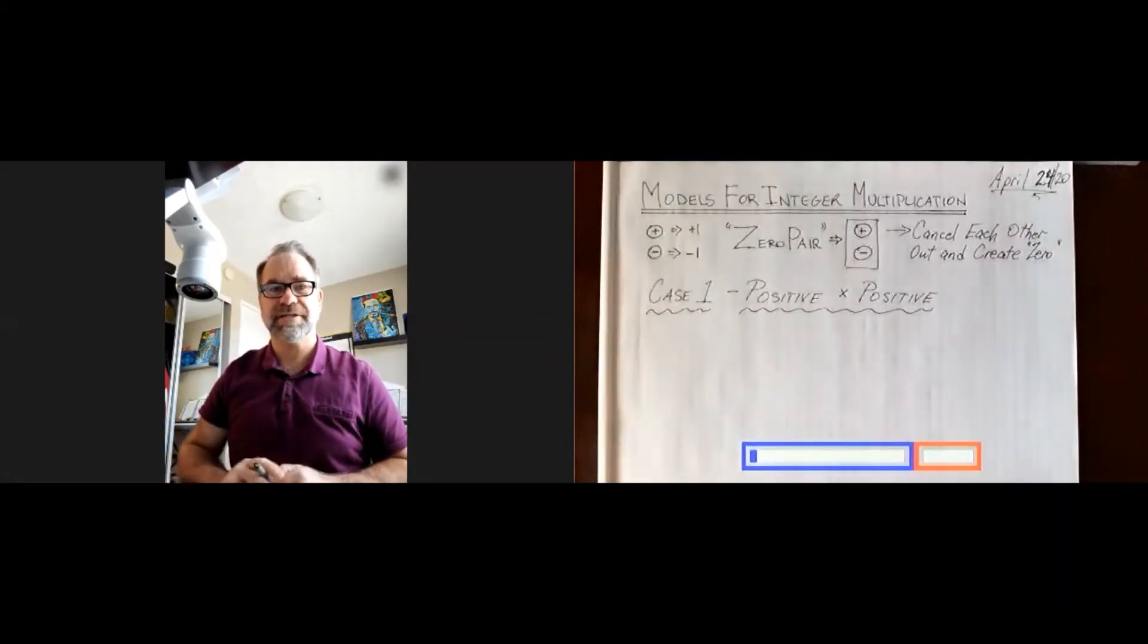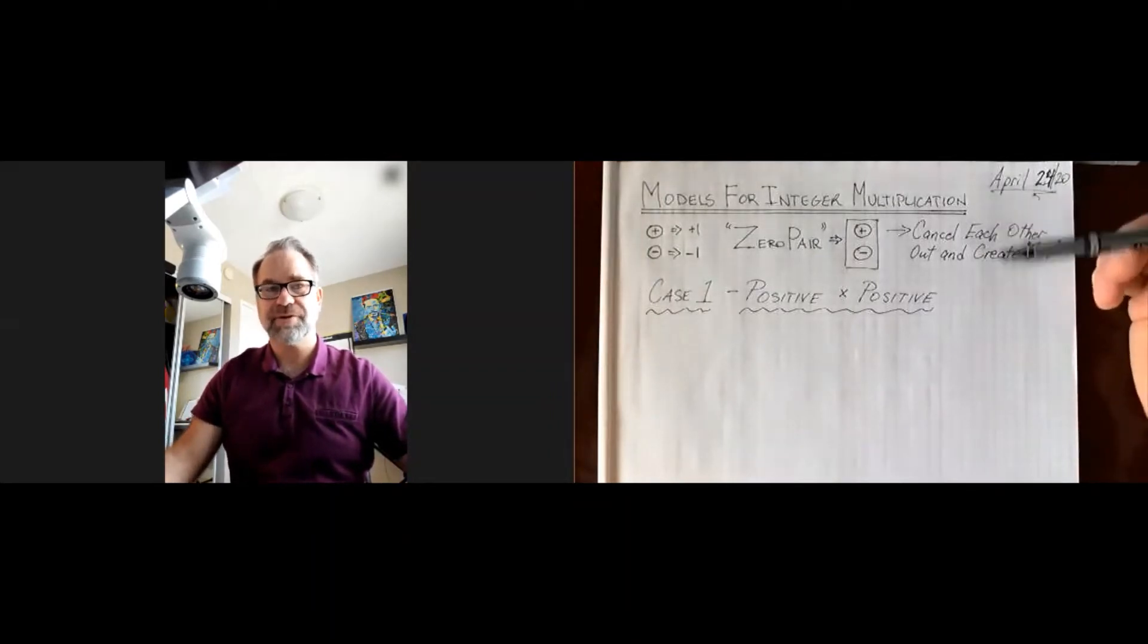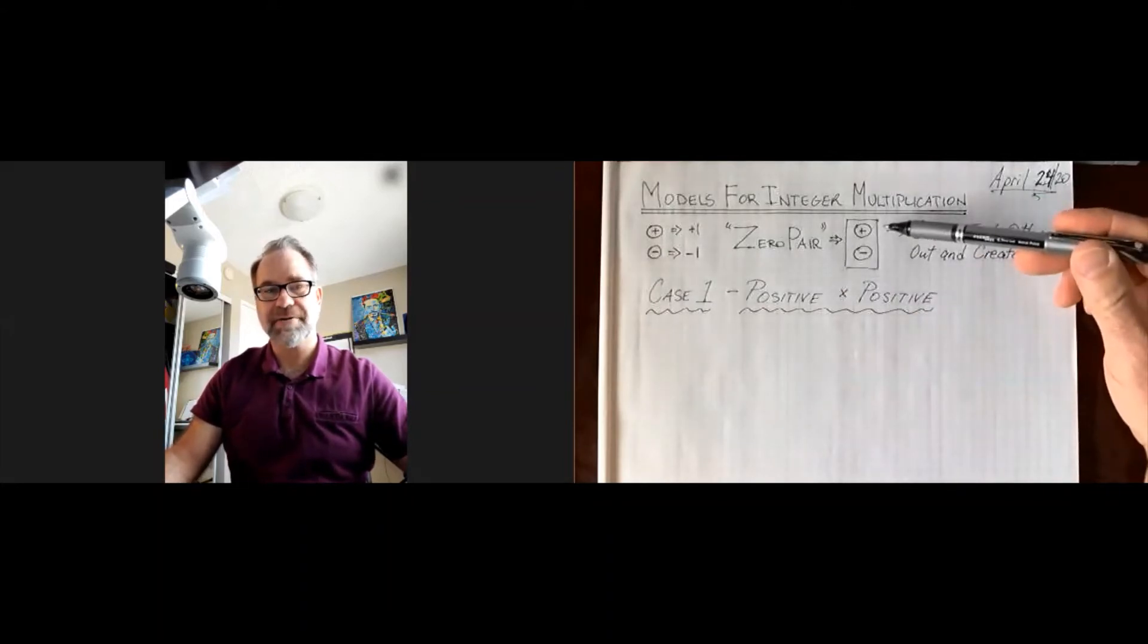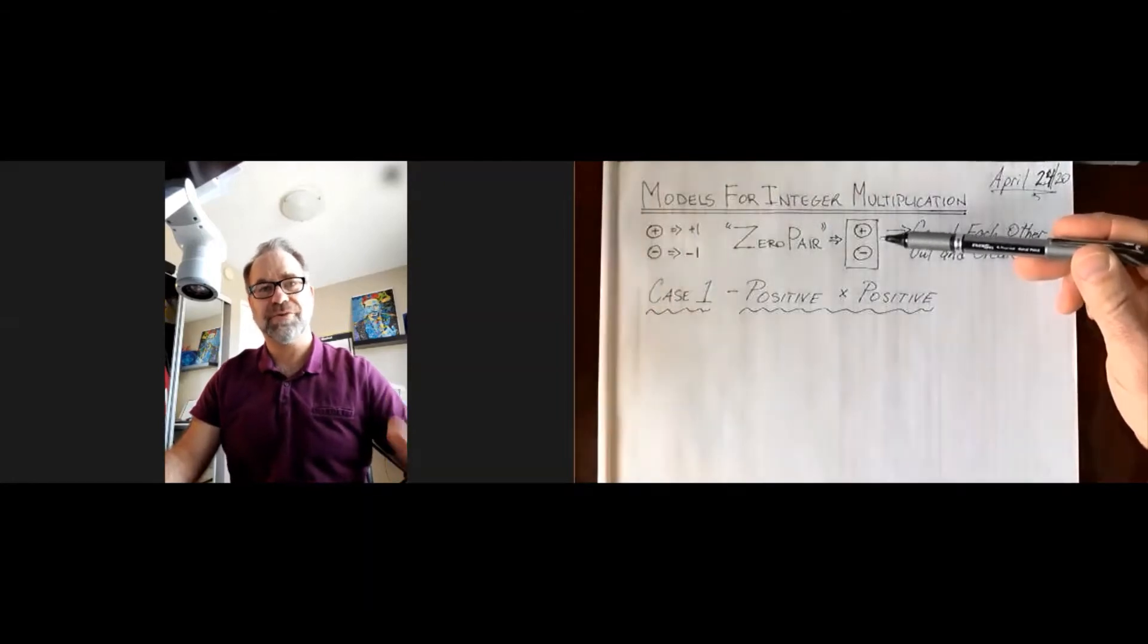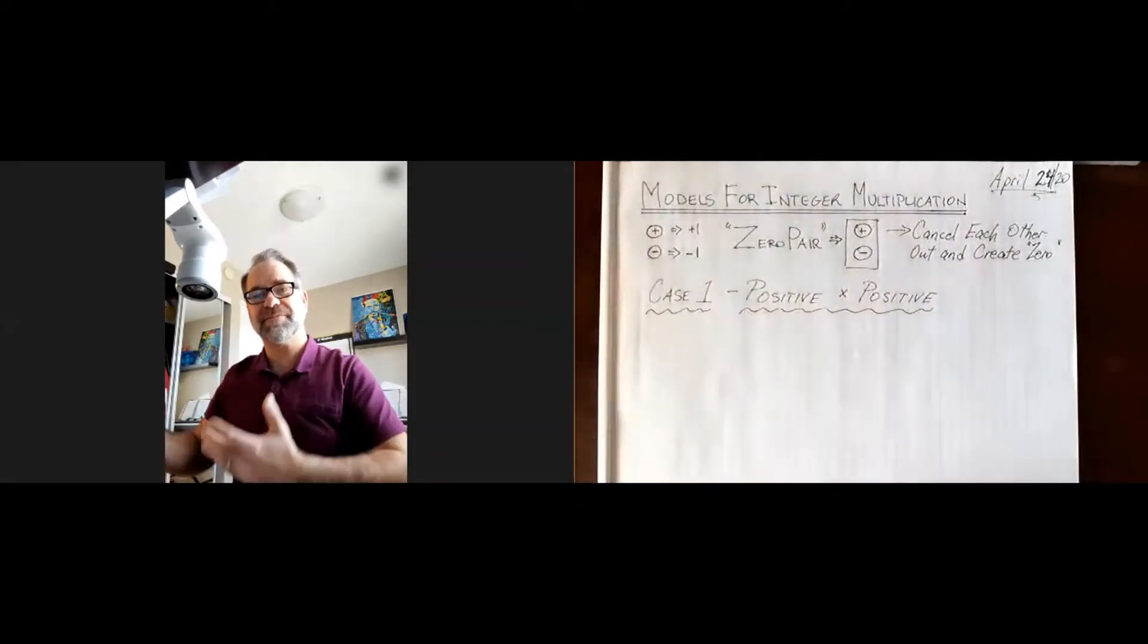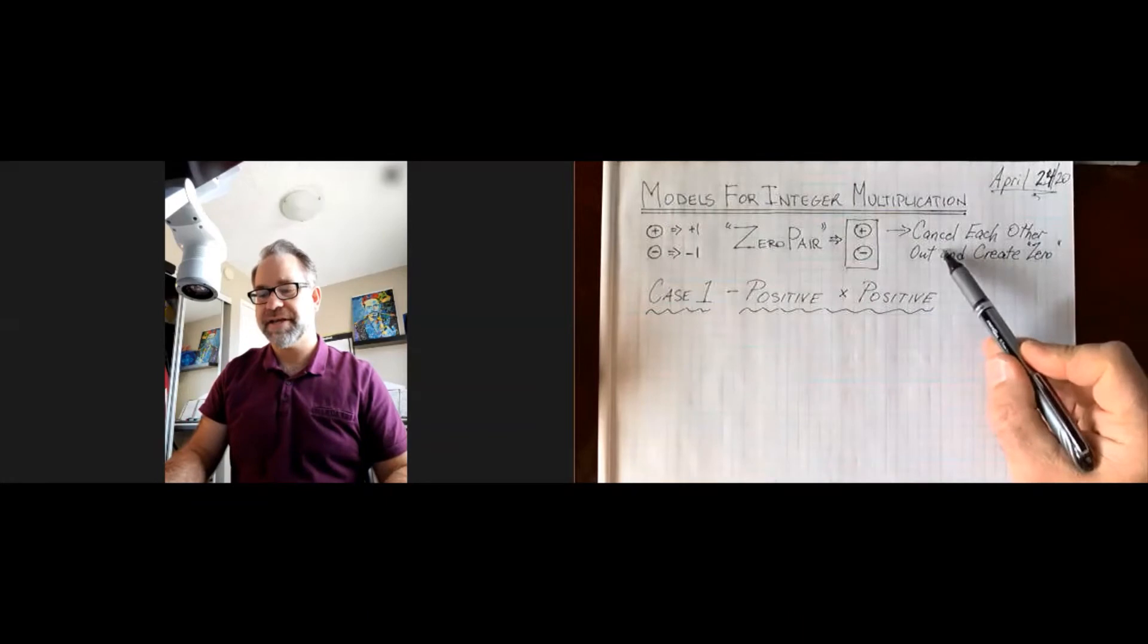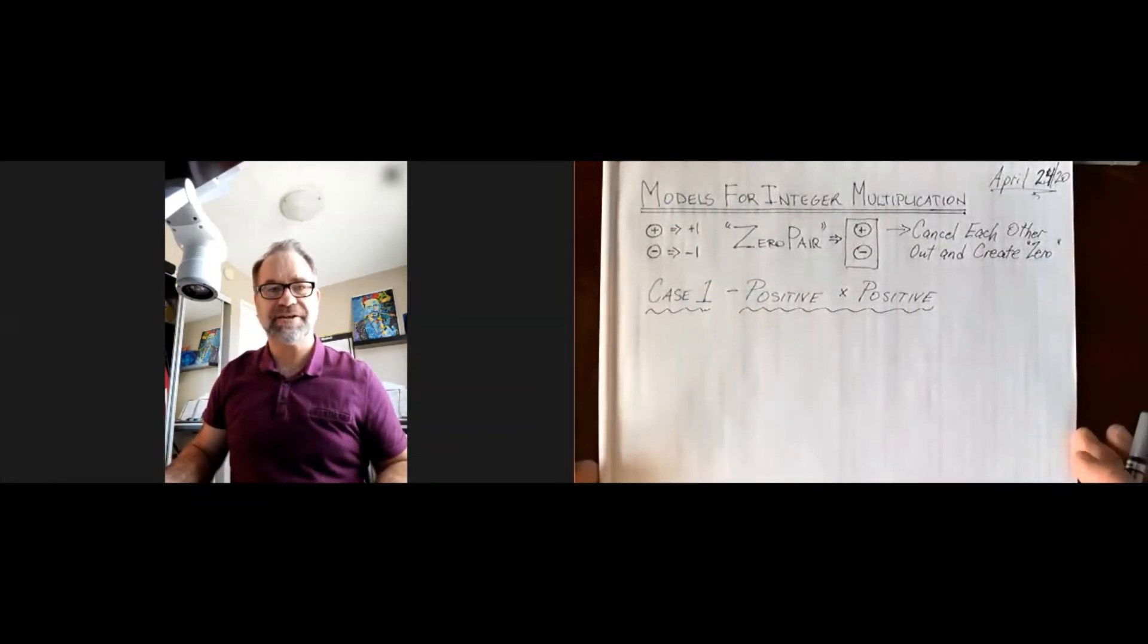And if you are a little bit unclear of that, go back and watch some of the other videos. Another thing that we will end up using today is something called zero pairs. A zero pair is the value you get whenever you have the same number of positives with the same number of negatives. They cancel each other out and create zero.